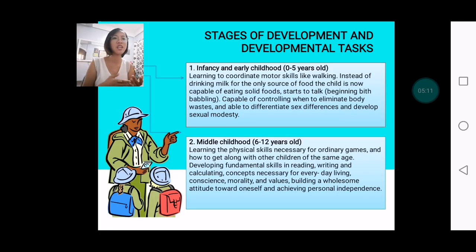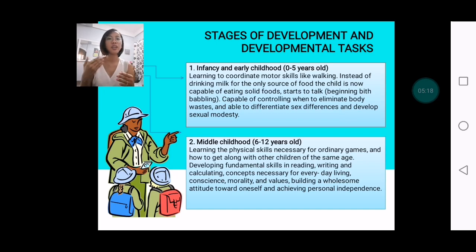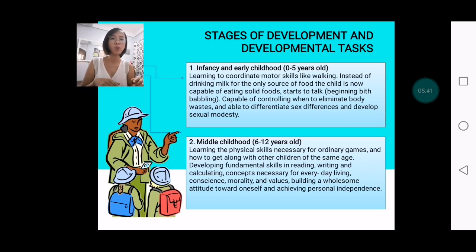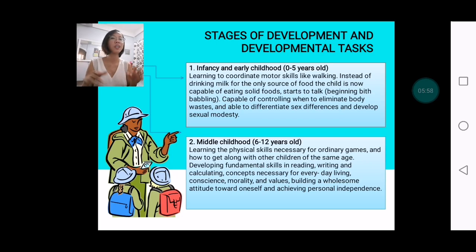Here now are the stages with their labels. The first is infancy and early childhood, ranging from zero to five years old — from the very moment you were born up to age five. During this stage, you are expected to learn to coordinate motor skills like walking. It may happen at age one, two, or three — that's okay.